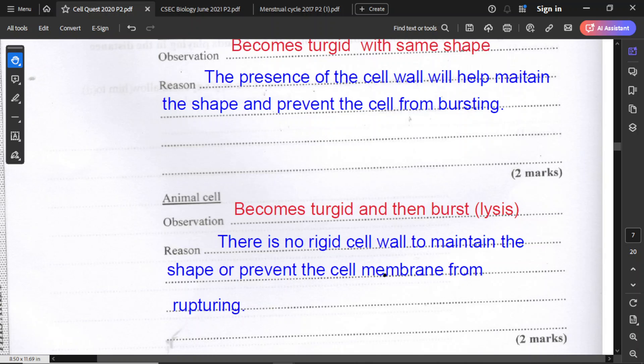For the animal cell, the animal cell becomes turgid as well. However, it will burst because it's distilled water. The process of bursting of the cell, we call it lysis, or the cell will lyse. The reason for that is that there is no cell wall. There is no cell wall to maintain the shape or prevent the cell membrane from rupturing or bursting.